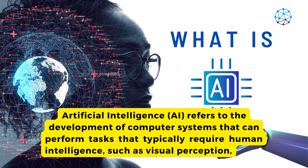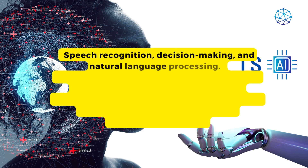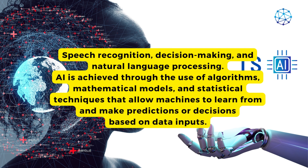Artificial intelligence (AI) refers to the development of computer systems that can perform tasks that typically require human intelligence, such as visual perception, speech recognition, decision making, and natural language processing. AI is achieved through the use of algorithms, mathematical models, and statistical techniques that allow machines to learn from and make predictions or decisions based on data inputs.